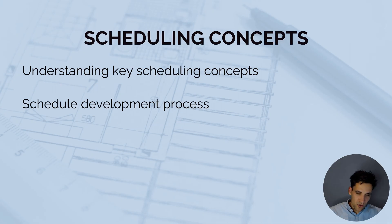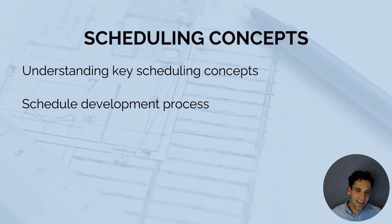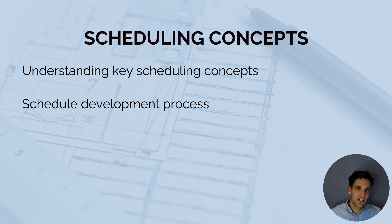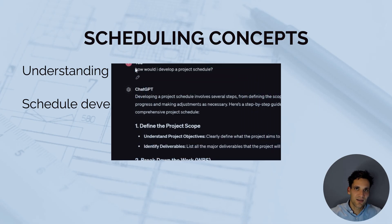The first use case of ChatGPT for project scheduling I'll talk about is using ChatGPT to understand key scheduling concepts like the critical path, float, and the actual processes we use to create a schedule. This is where you use ChatGPT to understand the technical side of project scheduling.